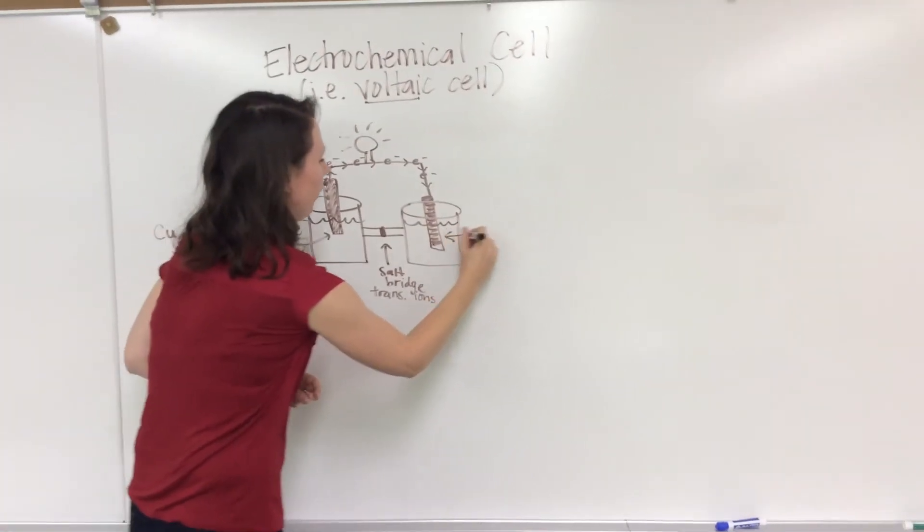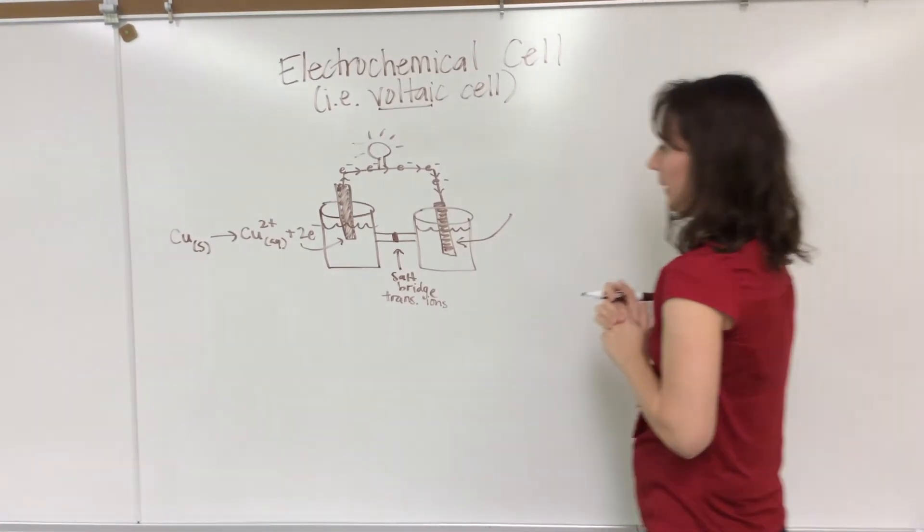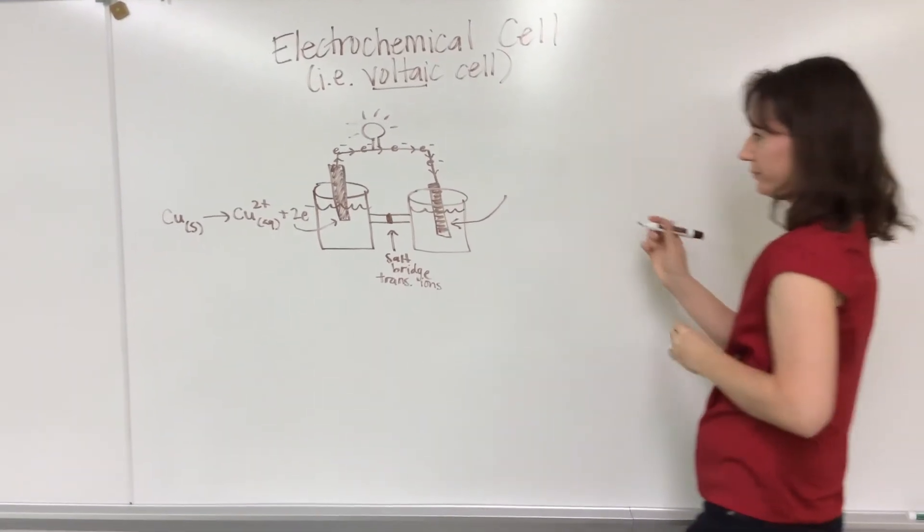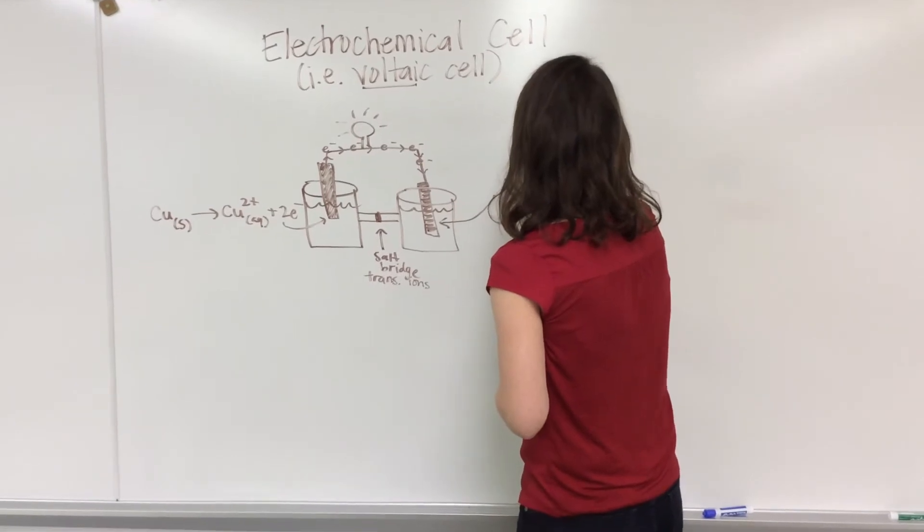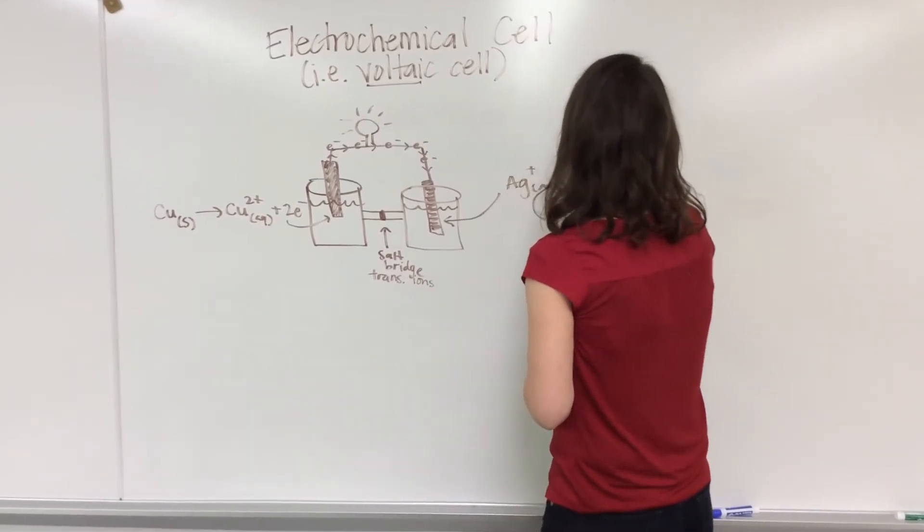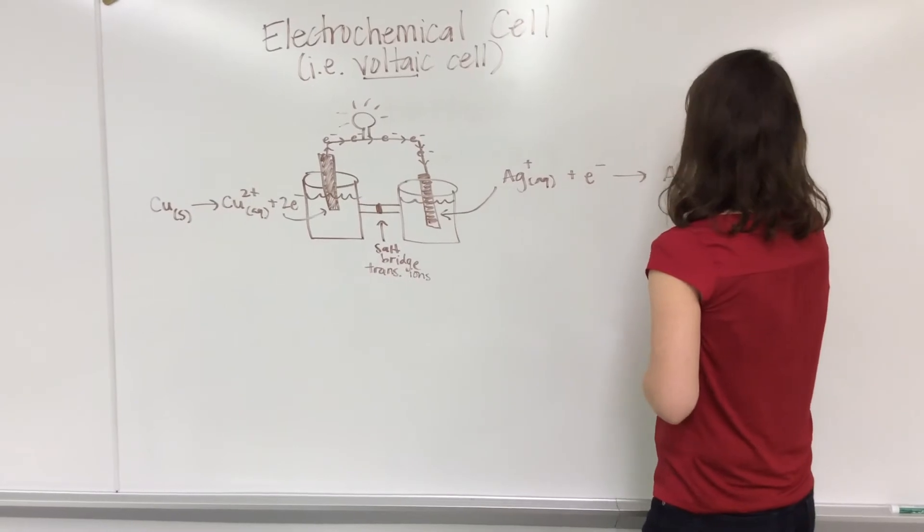Now let's figure out what's going on over here. The electrons are transferring over here. That must be a reduction. Let's just pretend we've got Ag⁺ aqueous plus e⁻ becoming Ag solid.